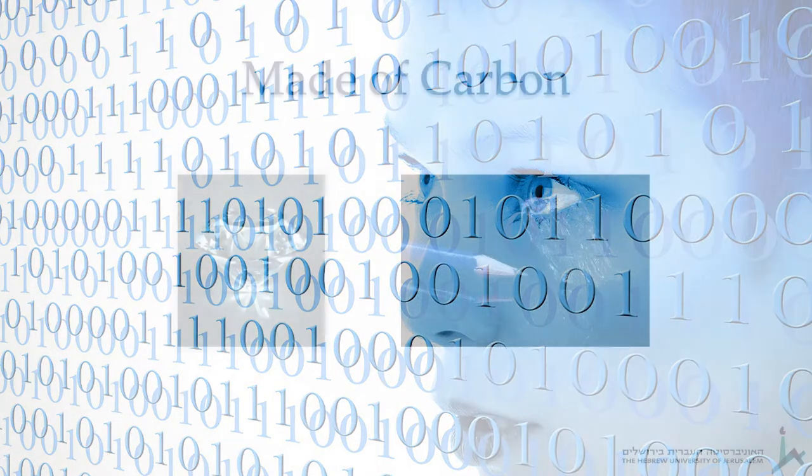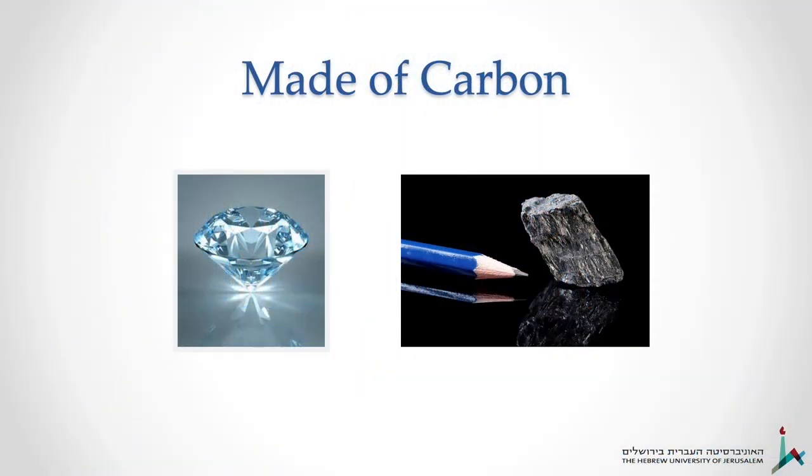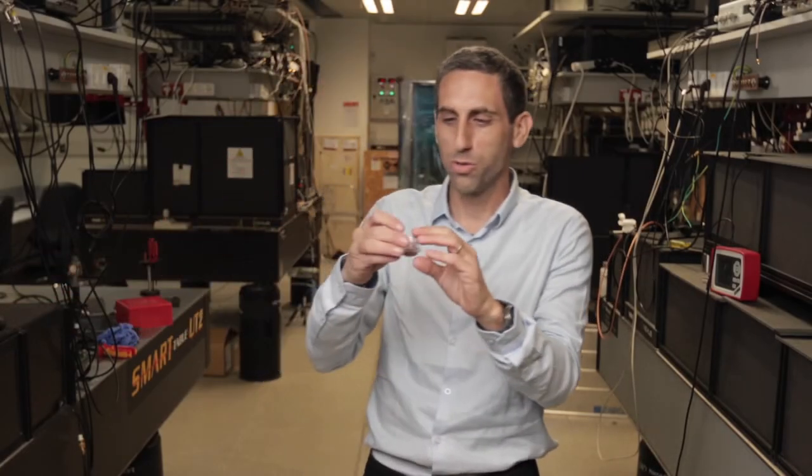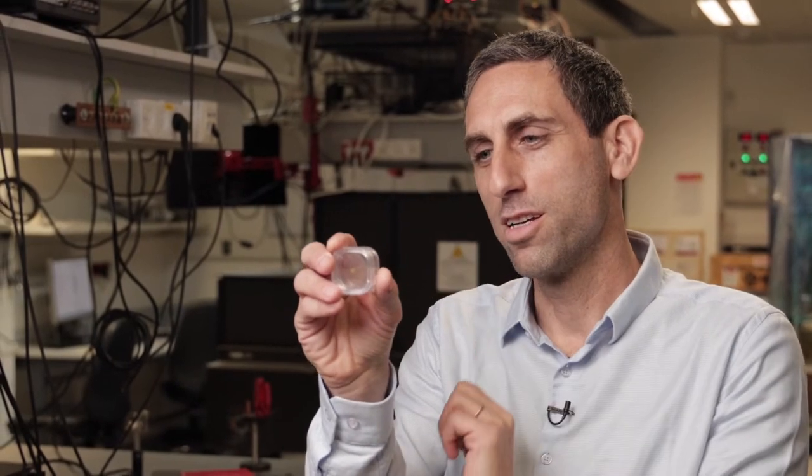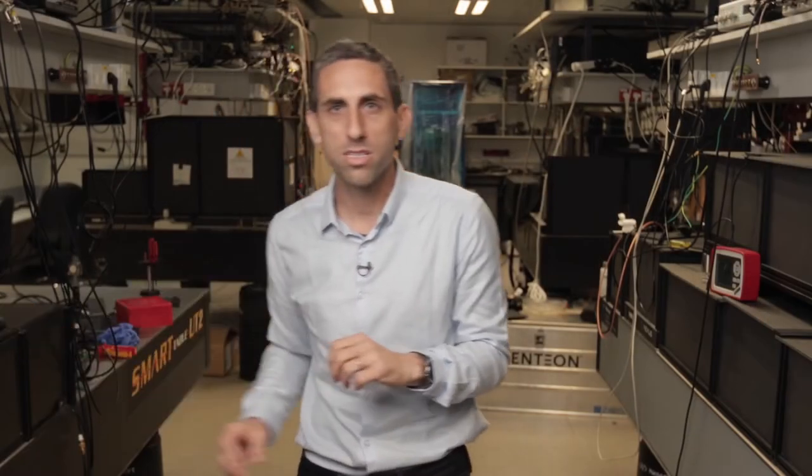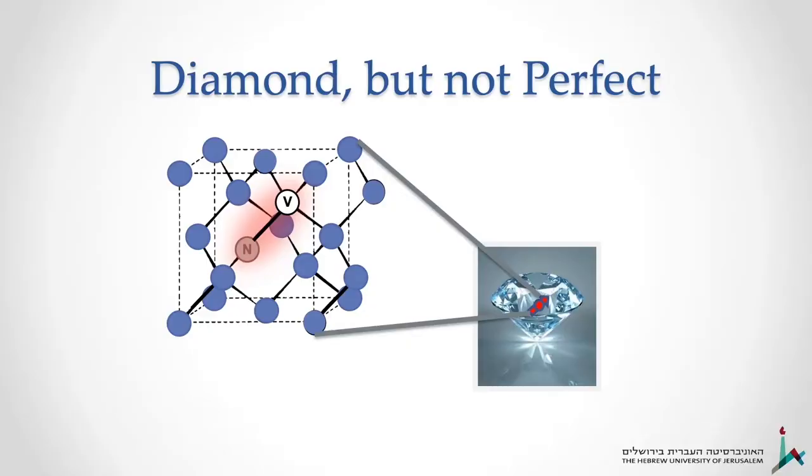This is where we come in with our diamonds. In my lab we work with diamonds—not these very nice gems that you see on the screen. I can actually show you a tiny piece of diamond that we work with. It looks very unimpressive; it's a kind of a square slab, slightly yellowish because it has a lot of defects in it. I'll tell you about the defects in a second, but it's still a very high grade diamond.